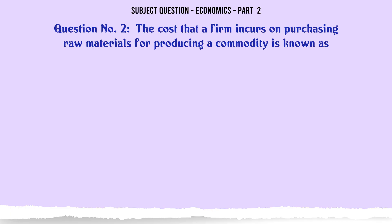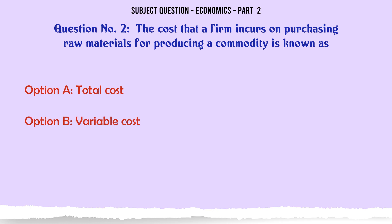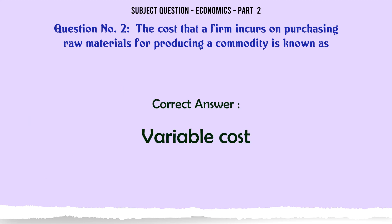The cost that a firm incurs on purchasing raw materials for producing a commodity is known as: A. Total cost. B. Variable cost. C. Fixed cost. D. Implicit cost. The correct answer is: Variable cost.